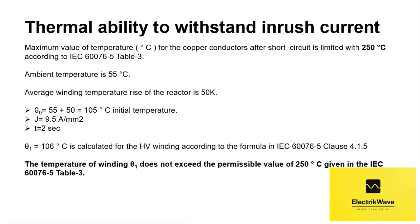Average winding temperature rise of the reactor is 50 Kelvin. Theta_0 equals 55 plus 50 equals 105 degrees Celsius initial temperature. J equals 9.5 ampere per mm². T equals 2 seconds. Theta_1 equals 106 degrees Celsius, calculated for the HV winding according to the formula in IEC 60076-5 clause 4.1.5. The temperature of winding theta_1 does not exceed the permissible value of 250 degrees Celsius given in IEC 60076-5, table 3.